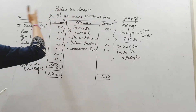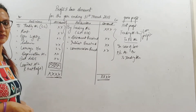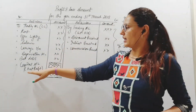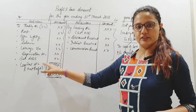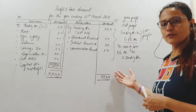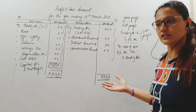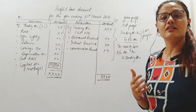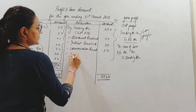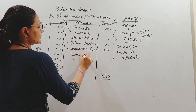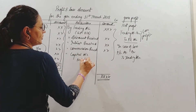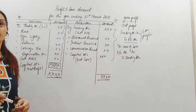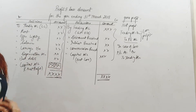Obviously it can be either profit or loss, not both. Similarly, when arriving at net profit, if the income side is falling short — meaning expenses are more and income is less — then we will have a net loss. In that case, we write 'by capital account' on the credit side as the balancing figure, representing net loss being transferred to capital account, and that's how the account will close.